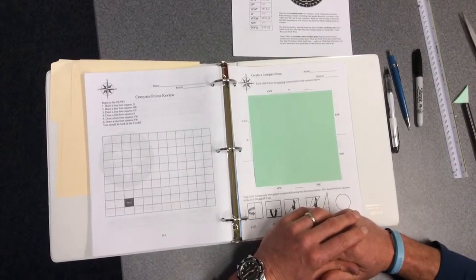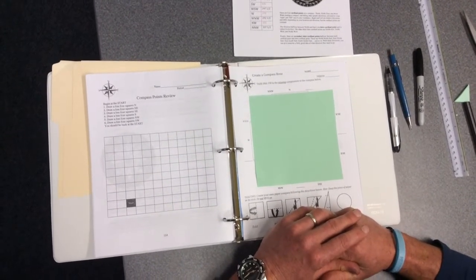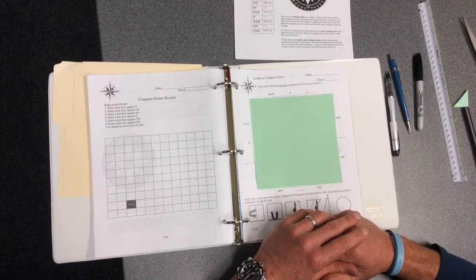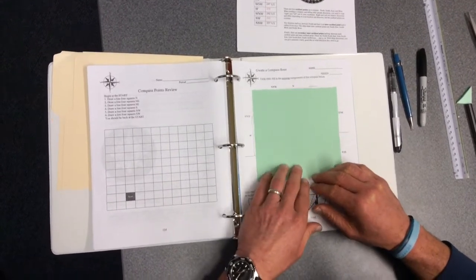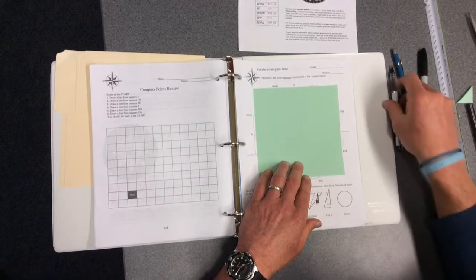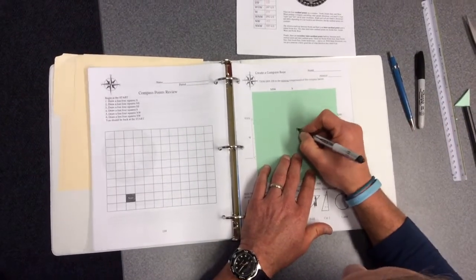Today we are going to make a compass rose. The first thing you have to do is put your first and last name on the back of your paper.